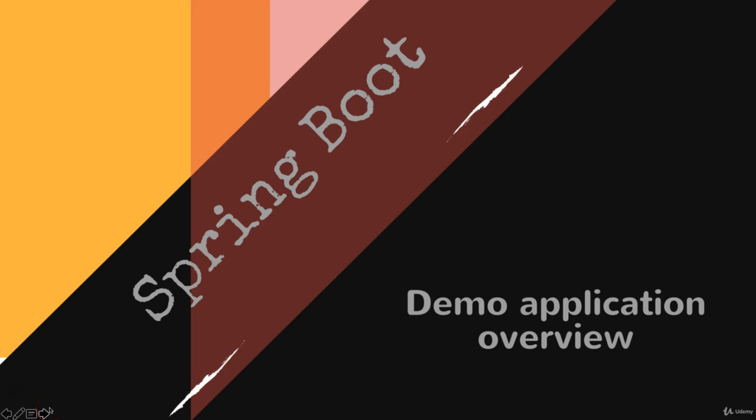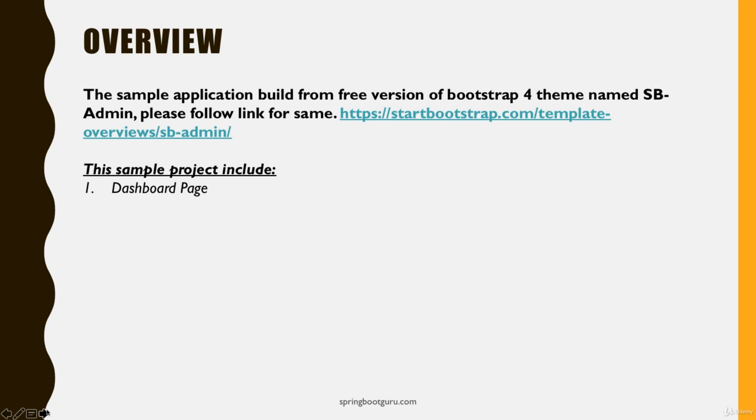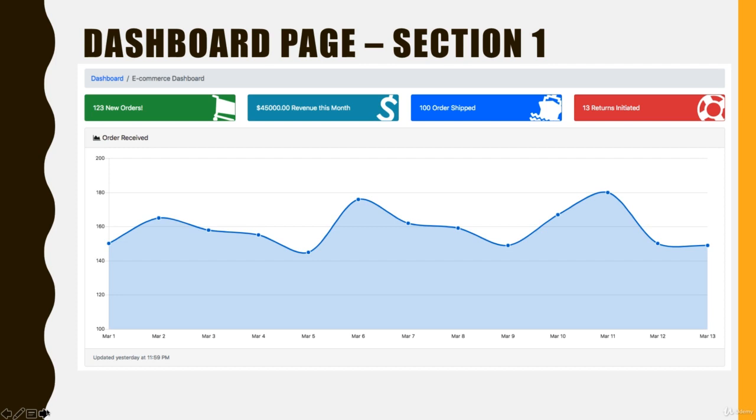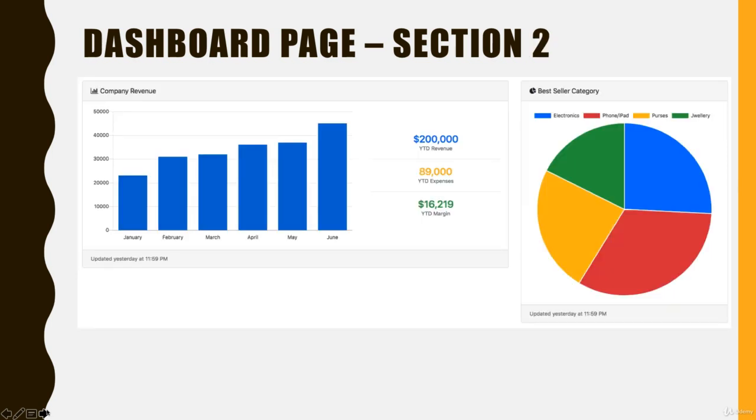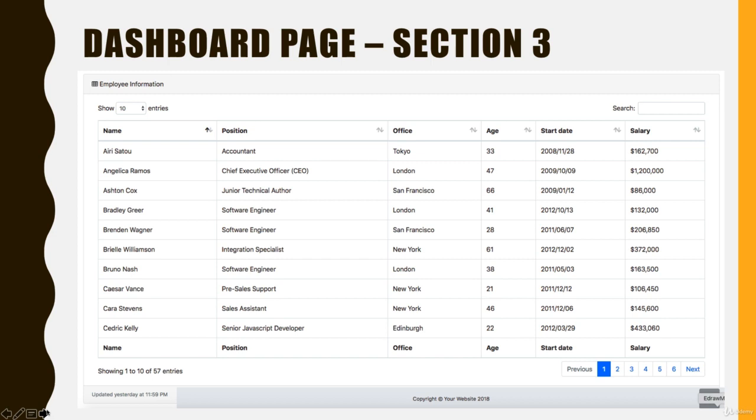In this tutorial we're going to discuss the demo application overview. I took a sample application built from the free version of Bootstrap 4 called spadmin. You can find it at free Bootstrap themes. I took a sample page called index.html, which looks like a dashboard page. We're going to work on that dashboard page during the whole course. I divided it into three sections: section one is order received and high-level order summary, section two is company revenue and bestseller category, and section three is employee information.